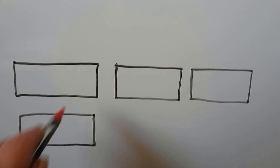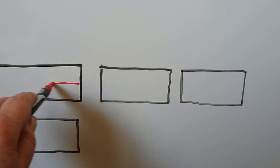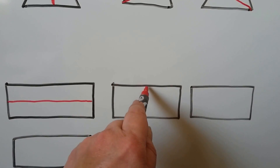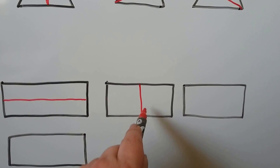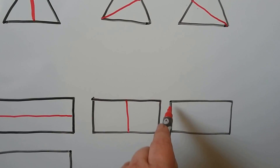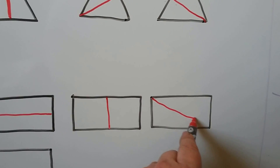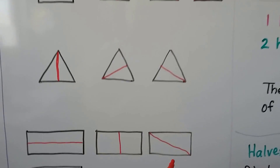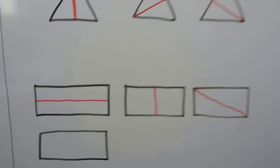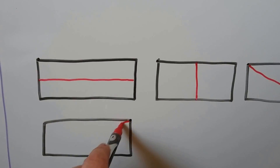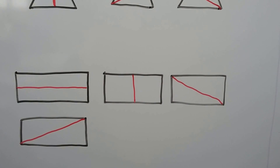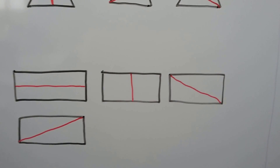For a rectangle, we can draw a line coming right down the middle horizontally. We could also separate it by drawing a line and making halves, and we can go from one vertex to another vertex, just like we did for the square, and from the other vertex down. That would make equal shares — that would make halves.